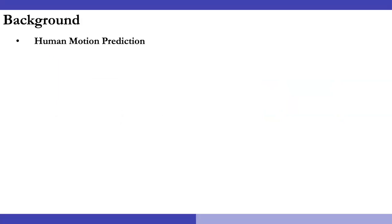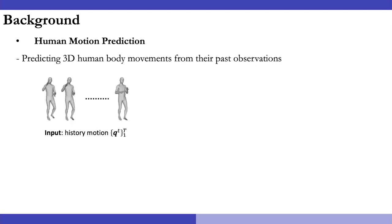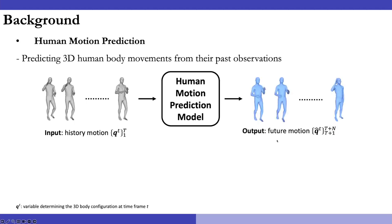In this work, we focus on human motion prediction, which aims at predicting 3D human body movements from their past observations. Specifically, given input history motion with sequence length t, we build human motion prediction models to predict the future motion until time t plus n.